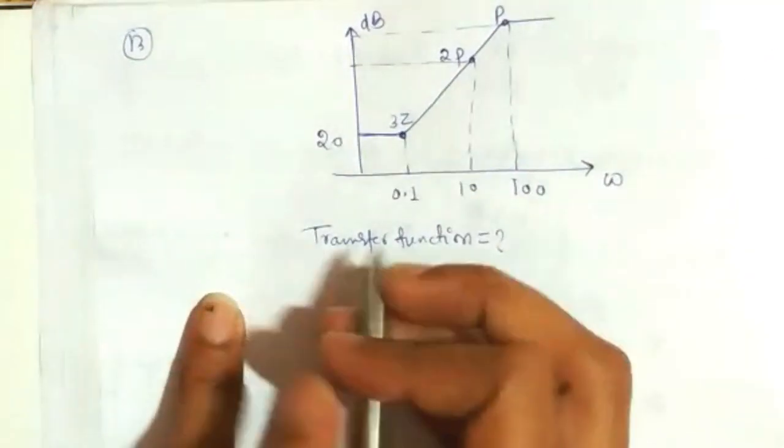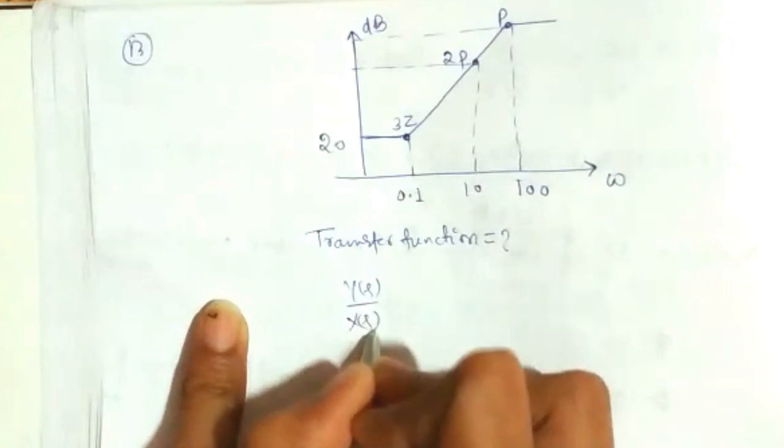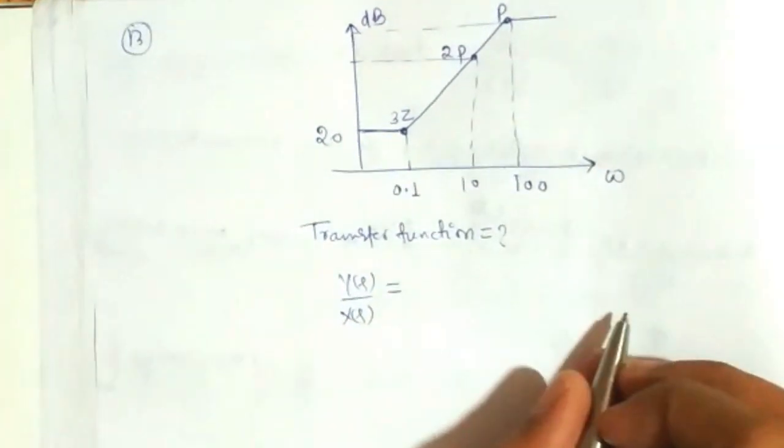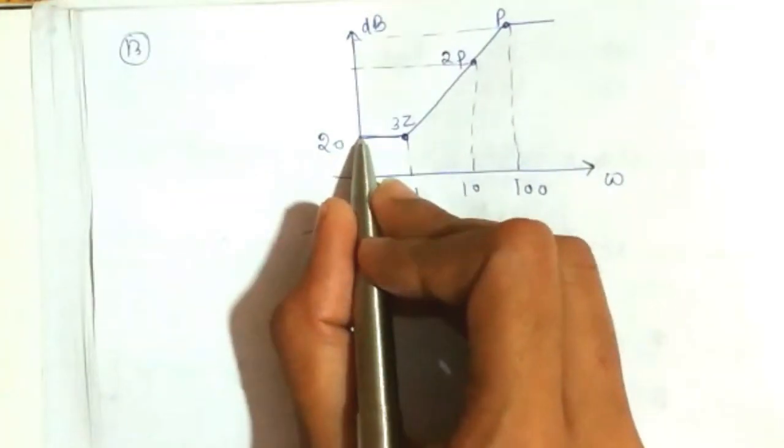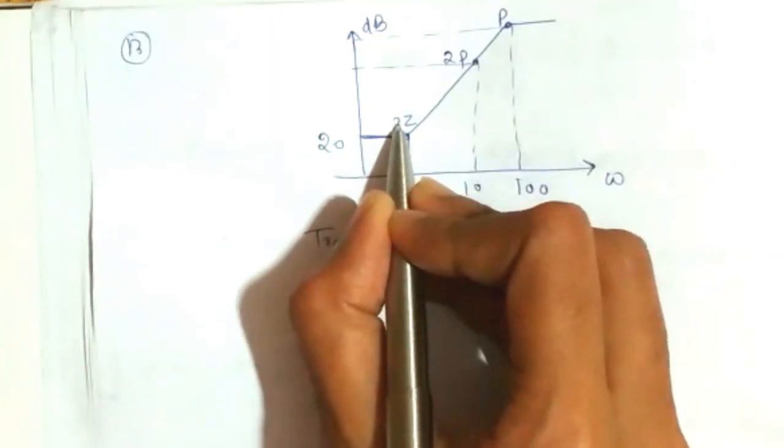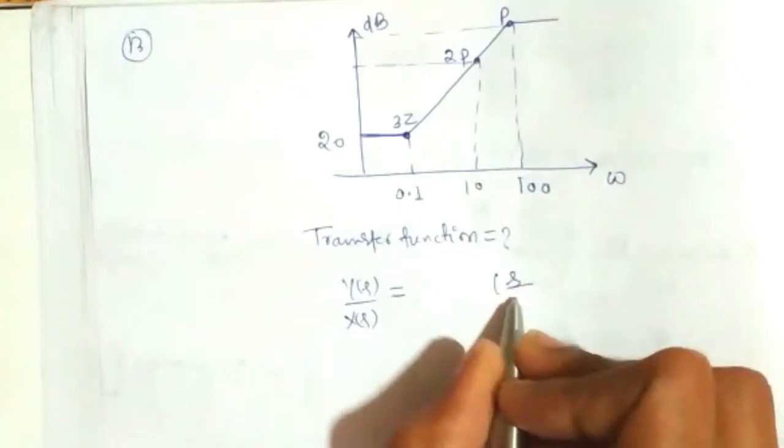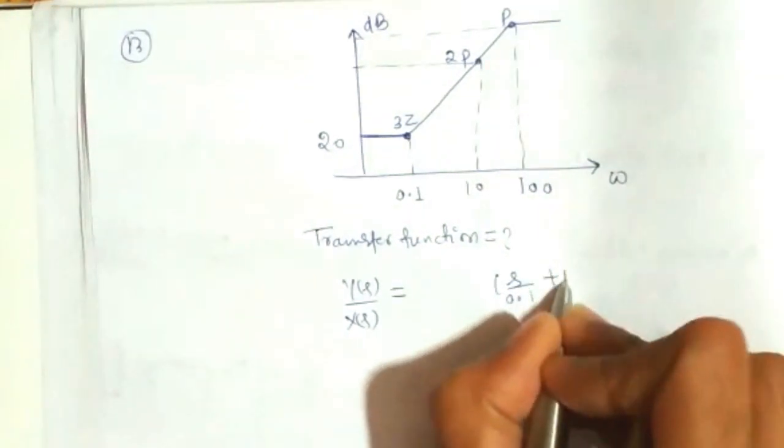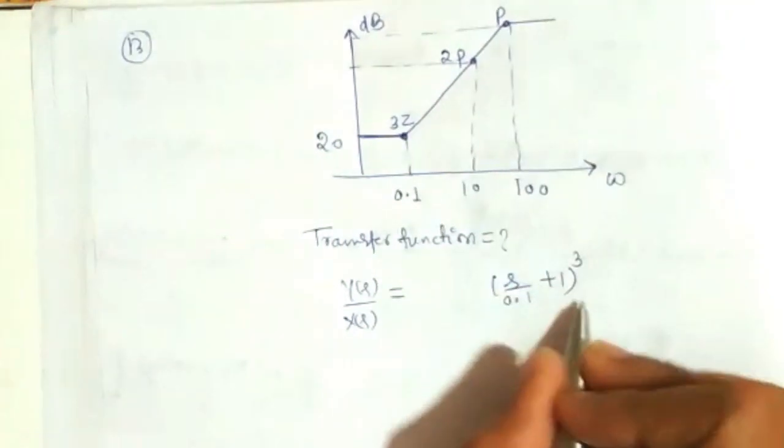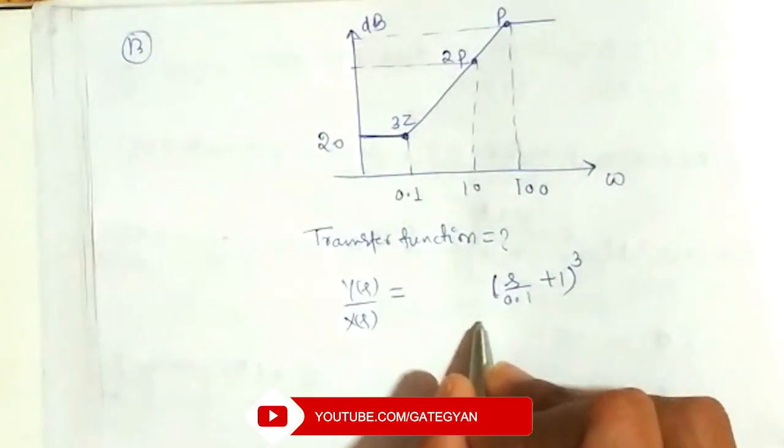So, to get the transfer function of the system, Y(s) upon X(s) is equal to first of all a constant, and here are three zeros at point 0.1. So, at omega equal to 0.1, there are three zeros. So, it is going to be (s/0.1 + 1) whole cube.